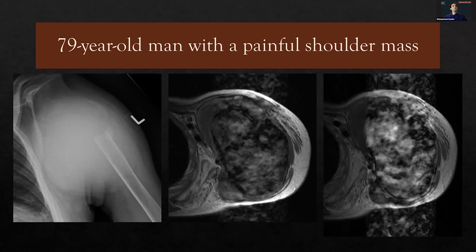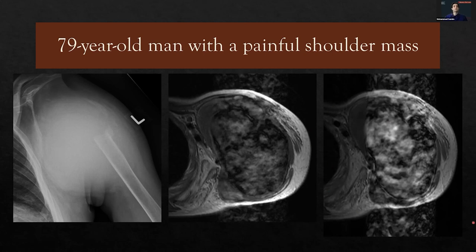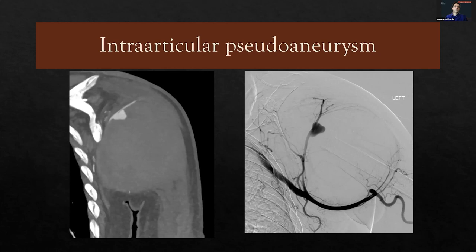The last case I want to share highlights how important it is to review pre-procedural imaging. This was a 79-year-old man with a painful shoulder mass — a destructive soft tissue mass overlying the shoulder and shoulder joint on MR with some areas of high T1 signal internally and heterogeneous T2 signal. What was striking was the presence of significant motion artifact — not involving the shoulder joint but specific to the mass — which made us concerned about a possibly very vascular mass. We suggested a CT angiogram with arterial phase to make sure we weren't going into something unexpected, and it nicely showed a pseudoaneurysm in the shoulder joint, which was ultimately treated by our interventional colleagues.